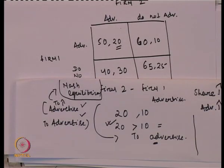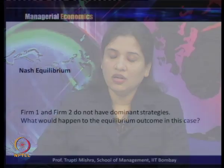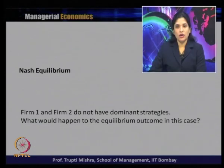Taking this example, we understand that when two companies are in competition and making decisions, they look at what may be the opponent's choice. But when reaching a decision, they have to see that irrespective of whatever the other company is doing, what is best for them. In this case, both firms have the dominant strategy - the dominant strategy for firm 1 is to advertise, and the dominant strategy for firm 2 is also to advertise.